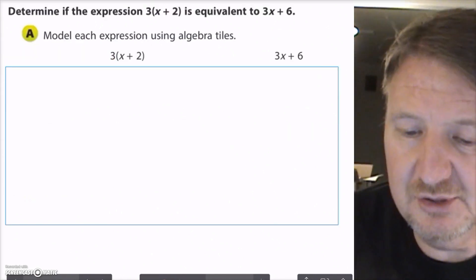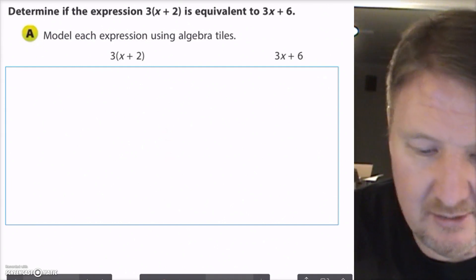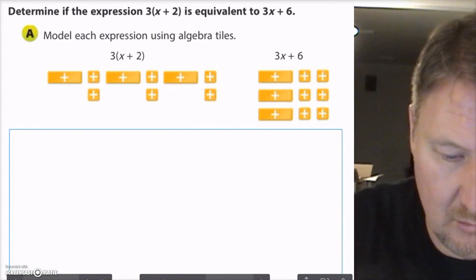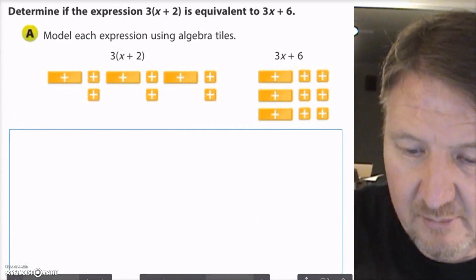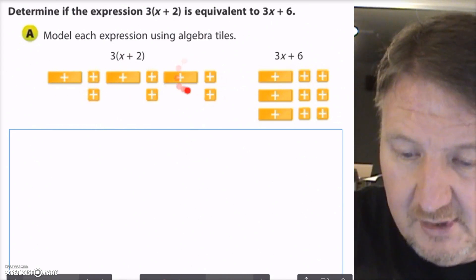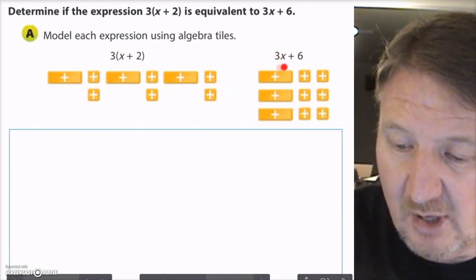Let's look at an example. It says model each expression using algebra tiles. So in this particular model, I have 3 times x plus 2, and I have 3x plus 6. I want to know if those two expressions are equivalent. So we're going to model using the tiles. Let me grab this thing and bring it down. So what I've done is I've modeled 3 x plus 2s. So here's x and here's 2. So I got 1, 2, 3 of those. That just goes exactly with what the problem says. Then I modeled 3x plus 6 over here. And I got 3 x's, and I got 6 ones.